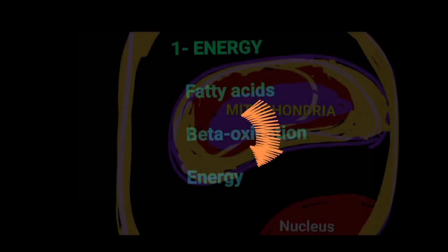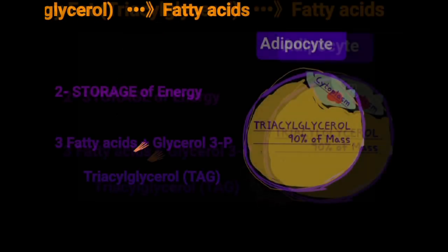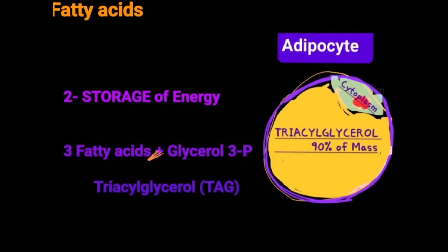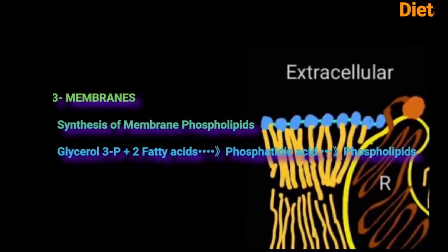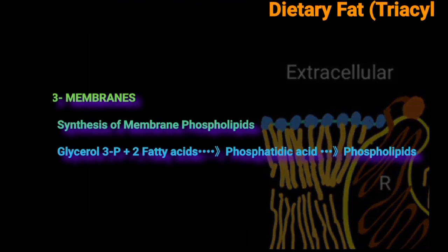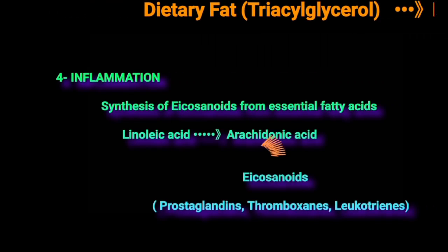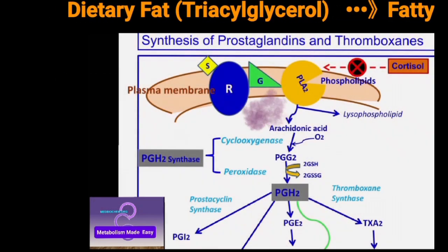Fatty acid beta oxidation in the mitochondria is the major energy-producing pathway from dietary and stored lipids. Fatty acids are stored in the form of triacylglycerol in adipocytes and provide many tissues with the energy they need during fasting. Phospholipids, the major membrane components, are made from fatty acids and glycerophosphate. The essential fatty acid linoleic acid is the precursor of arachidonic acid, which in turn is the precursor of all eicosanoids — important mediators of inflammation.